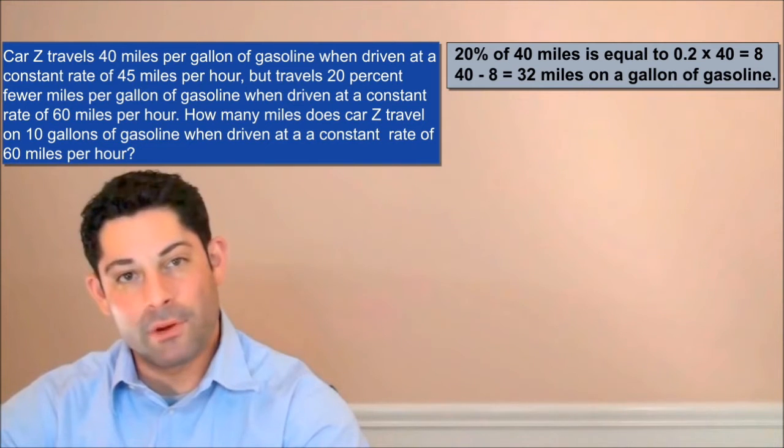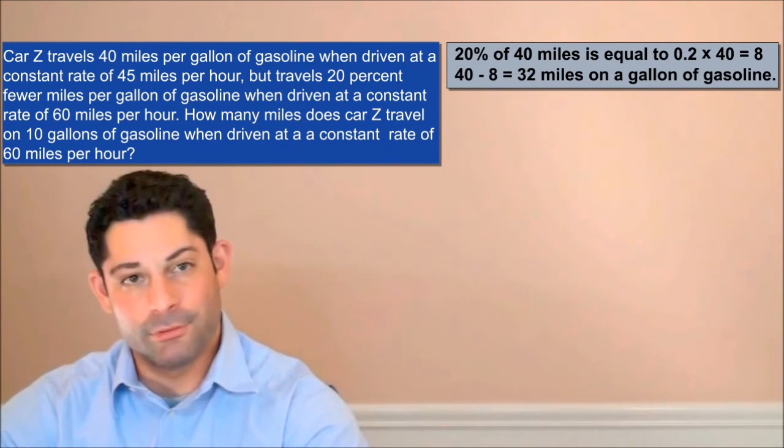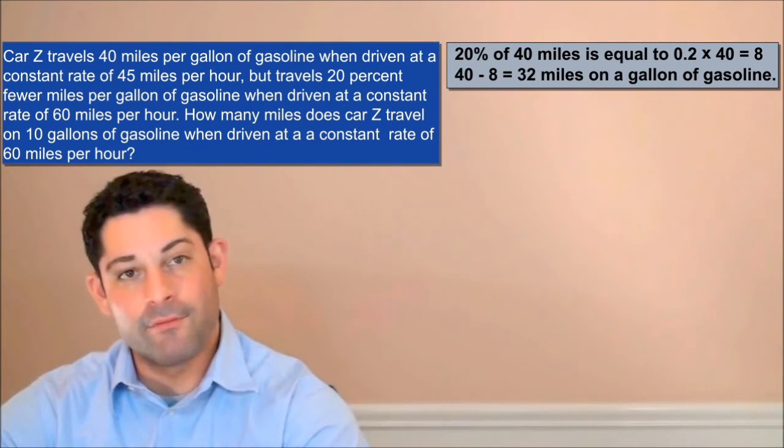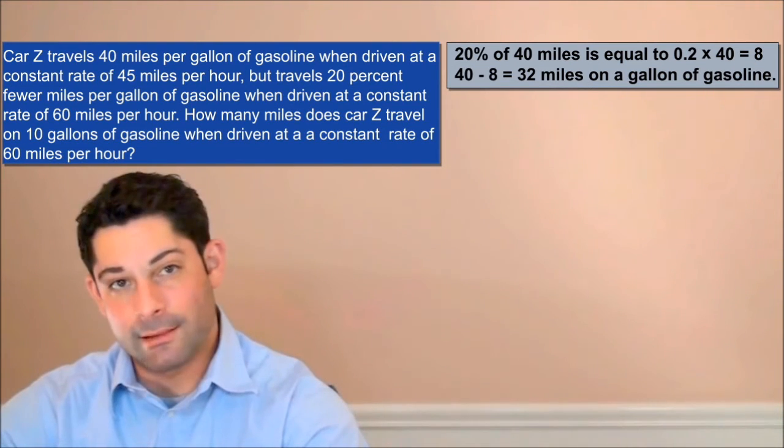20% of 40 miles is equal to 8, or 0.2 times 40. So, at 60 miles per hour, the car can travel 40 minus 8, or 32 miles on a gallon of gasoline.